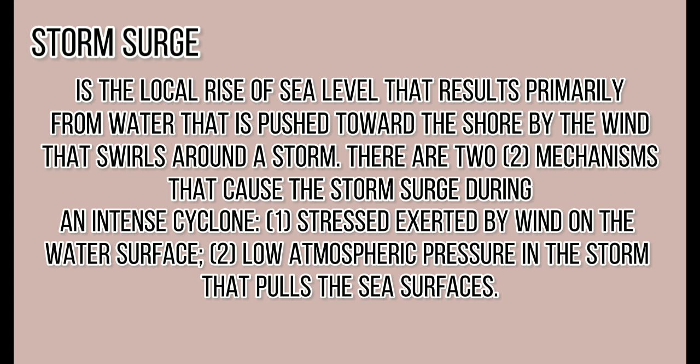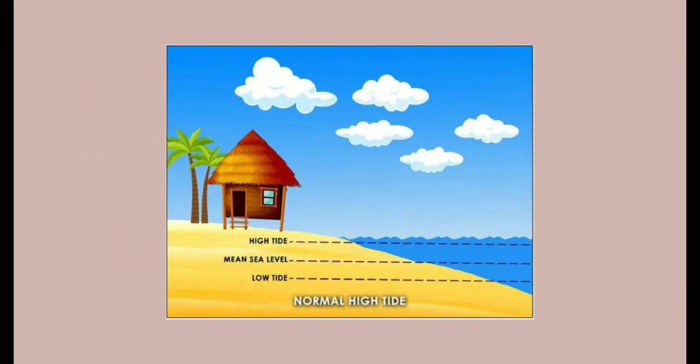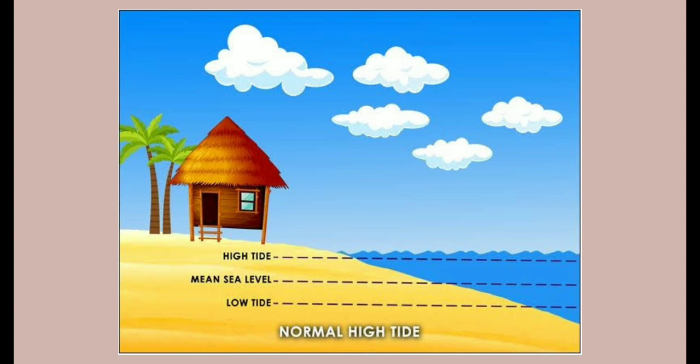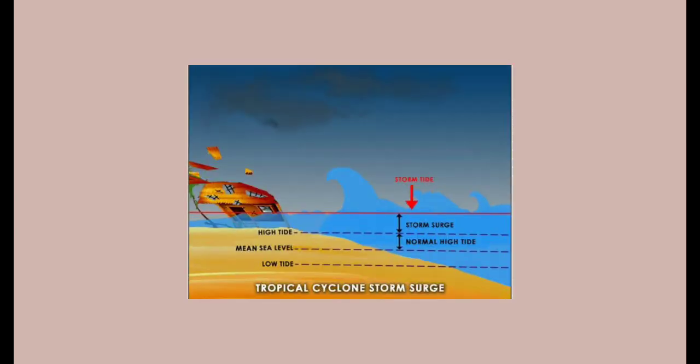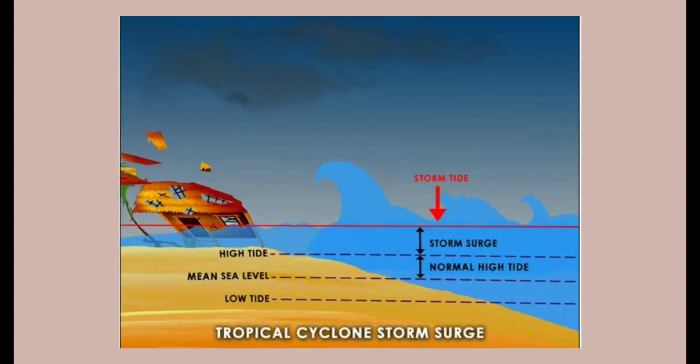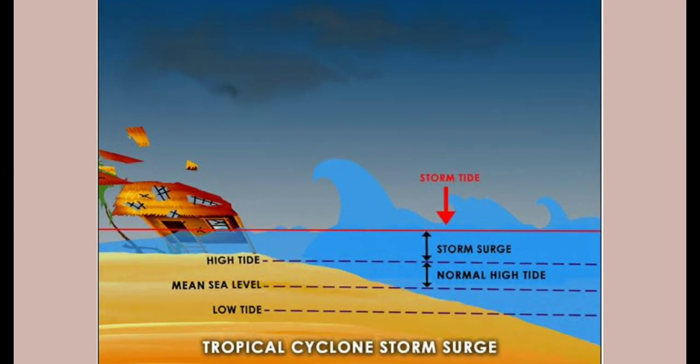A storm surge is not an advancing wall of water as movies depict it. Instead, it is a continual increase in sea level as a storm approaches landfall — from normal high tide to a storm surge that can be 17 feet tall.